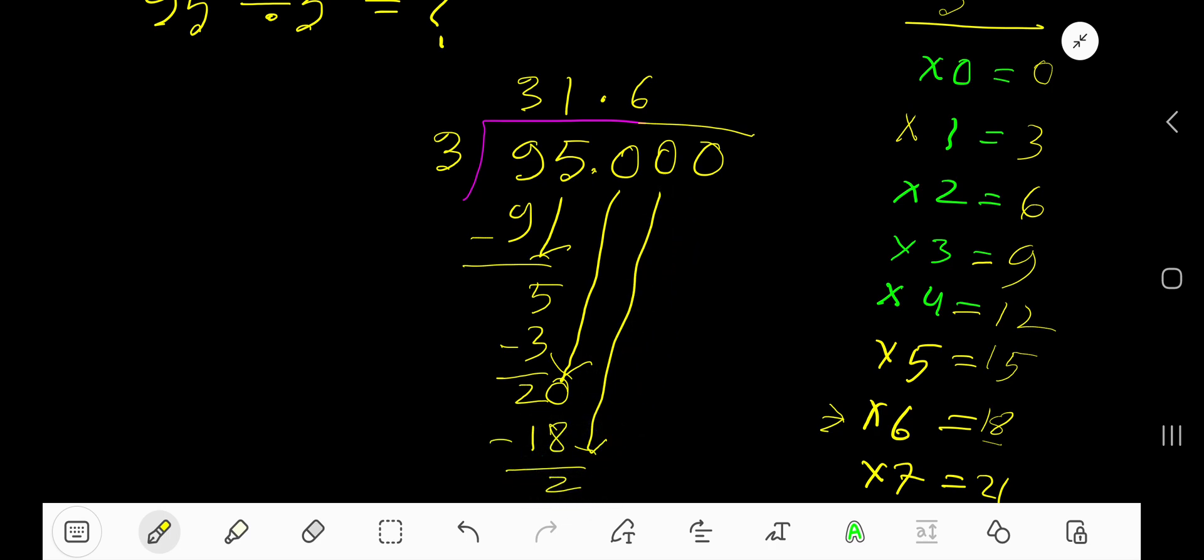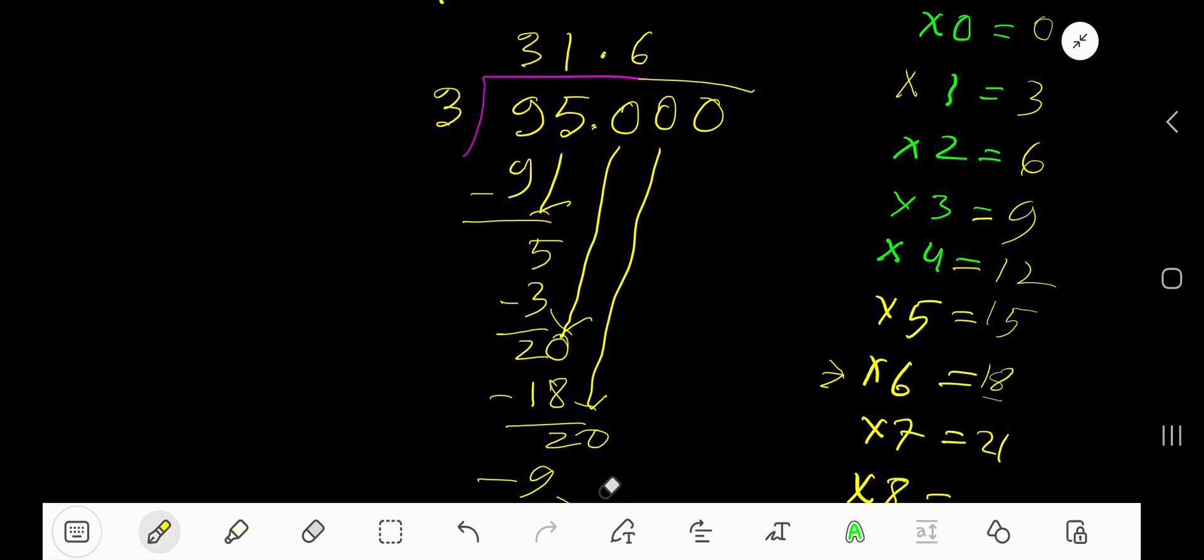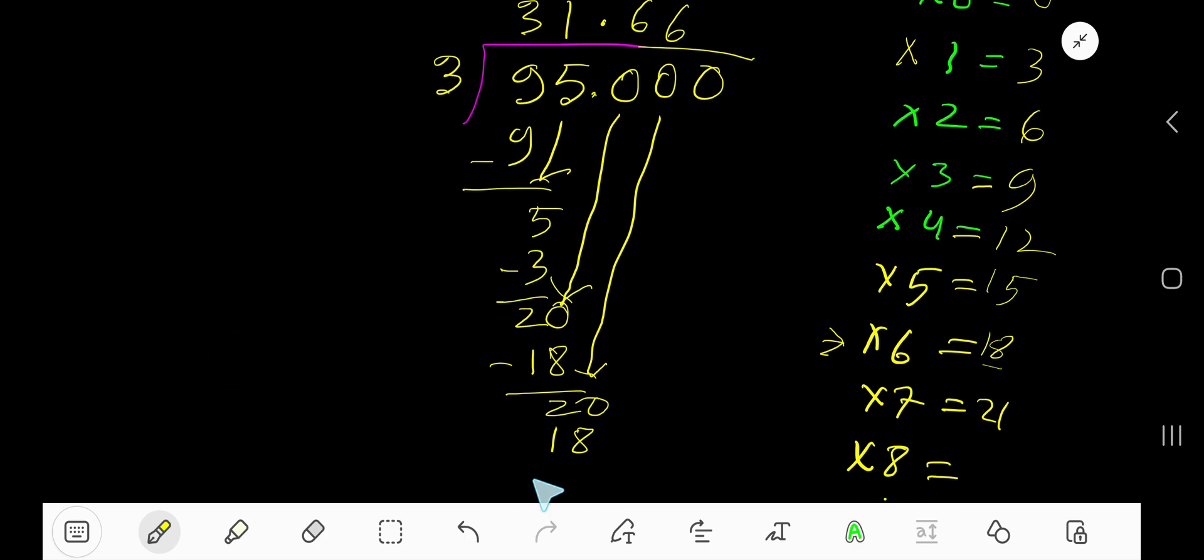Bring down this zero. 3 goes into 20, how many times? Again, again, 6 times. 6 times 3, 18. Subtract 2. Bring down next.